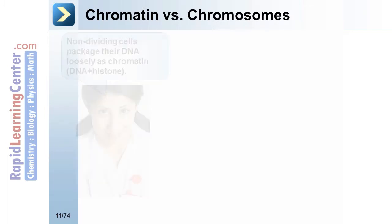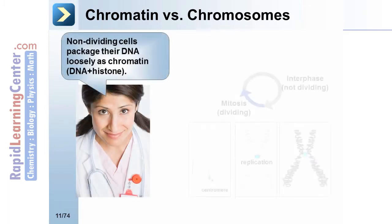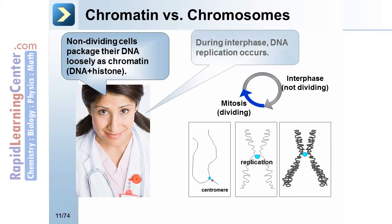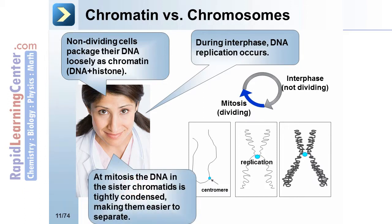Chromatin versus chromosomes: non-dividing cells package their DNA loosely as chromatin — that is DNA plus histones — during interphase, when DNA replication occurs. At mitosis, the DNA in the sister chromatids is tightly contracted, making them easier to separate.